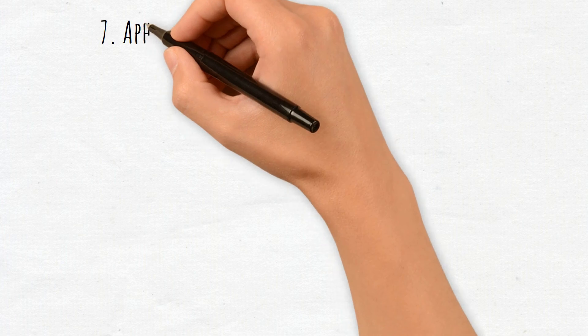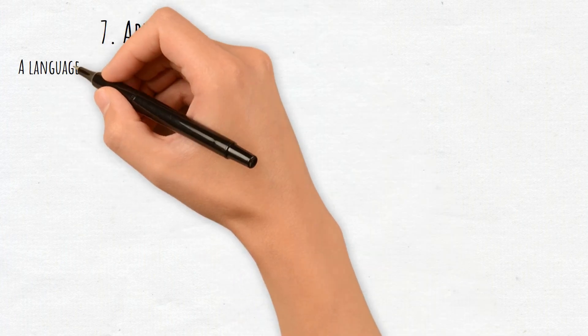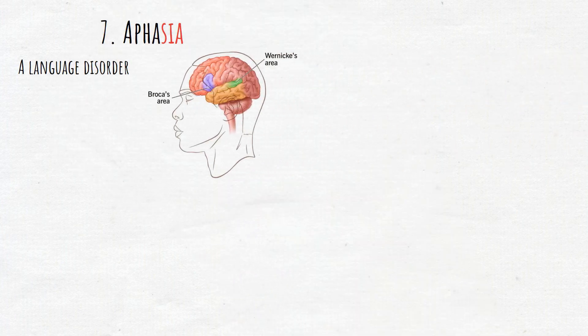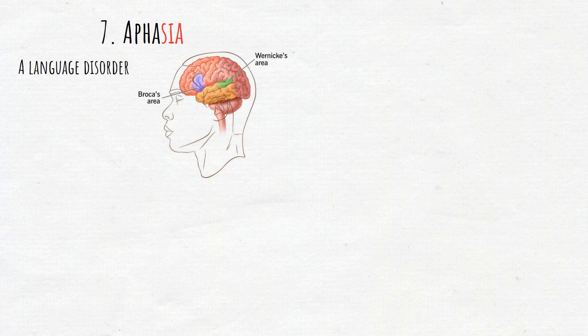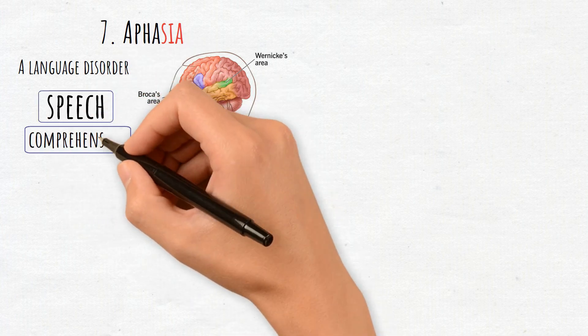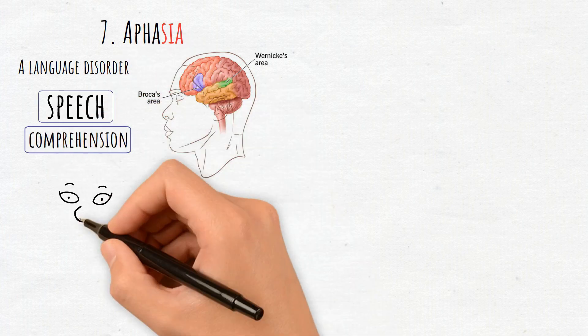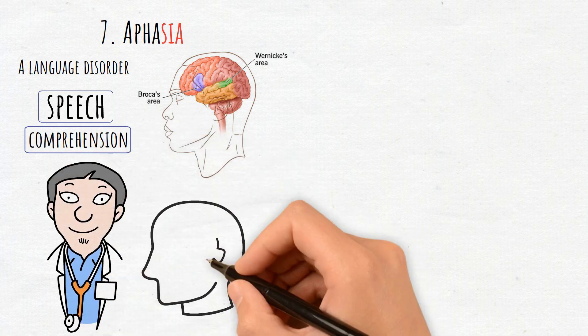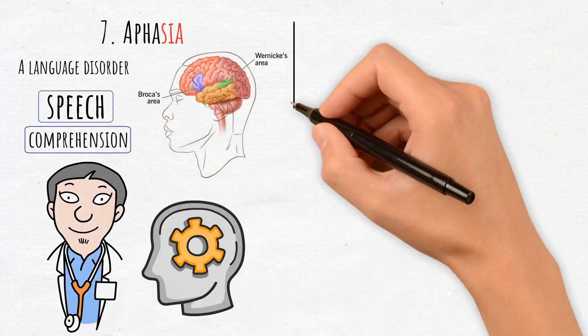7. Aphasia. A language disorder resulting from damage to areas like Broca's or Wernicke's, causing difficulties in speech and comprehension. Aphasia cases shed light on how the brain processes language.